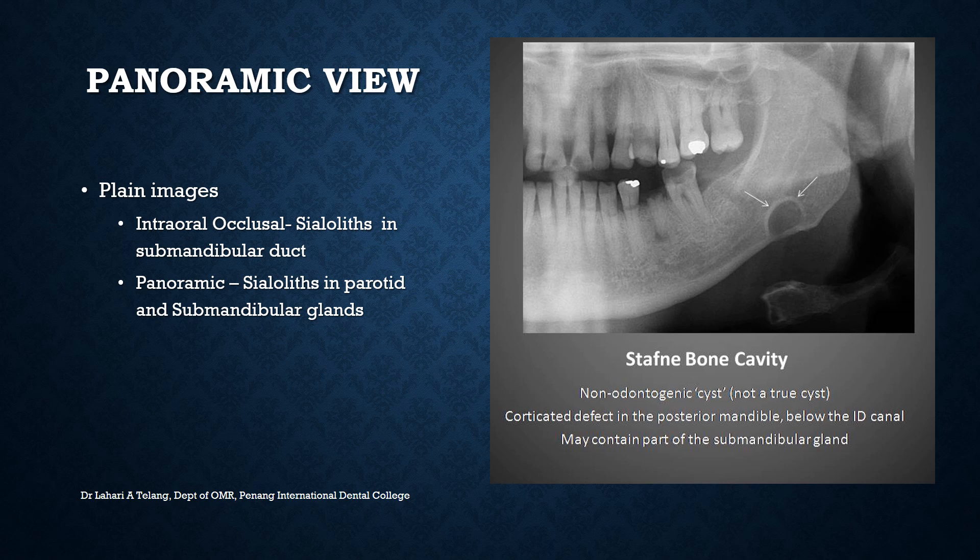What you are seeing on this image is a cropped panoramic view showing a Stafne bone cavity. It is not a true cyst — it is a corticated defect in the posterior mandible below the inferior dental canal, and it may contain part of the submandibular gland.